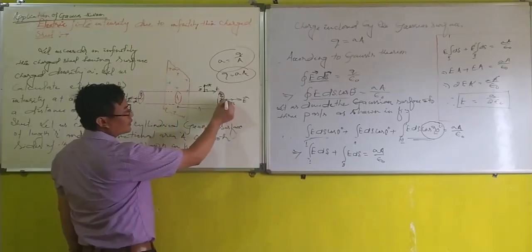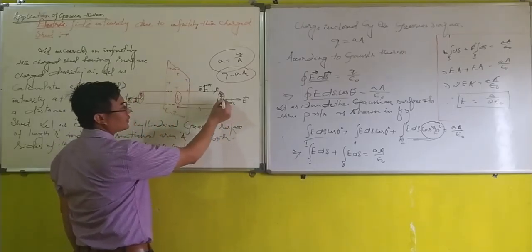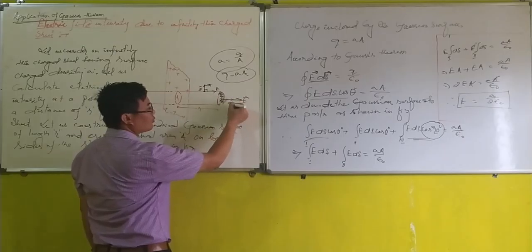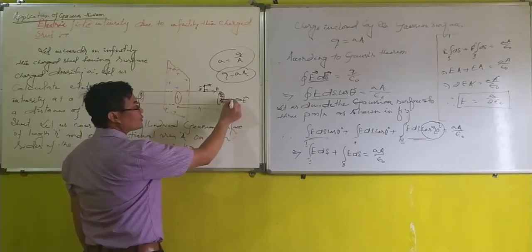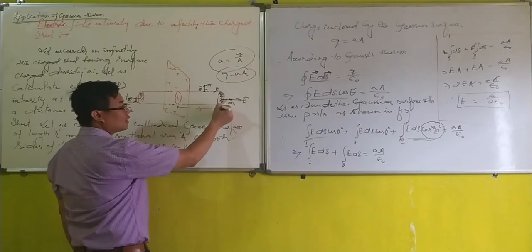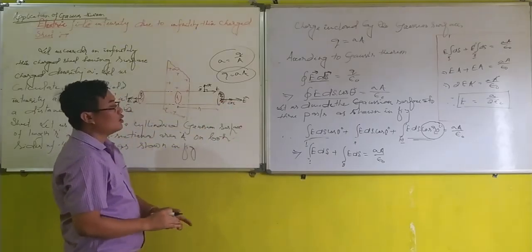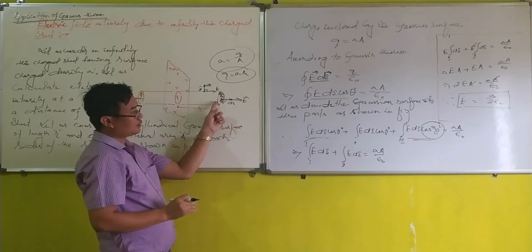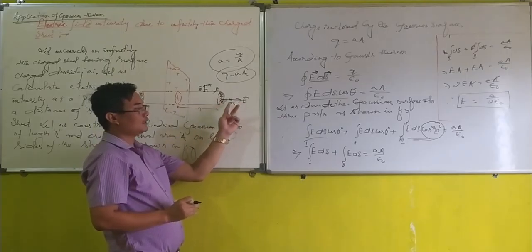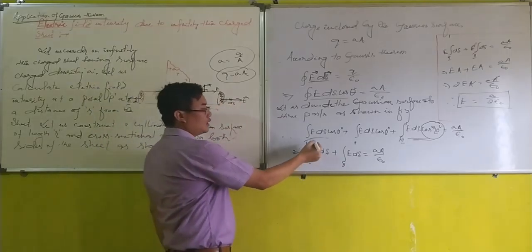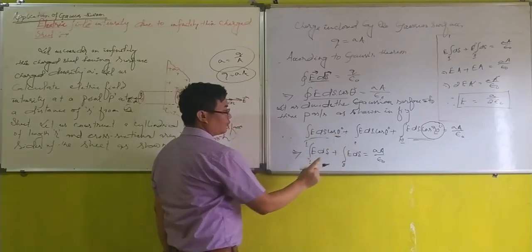Let us see here. For the first surface, electric field due to the positive charge is away from the charge. The surface area element is also perpendicular to the surface. Therefore, for the first part, the angle between E and dS is zero. And I am writing here E dS cos theta in the first part.